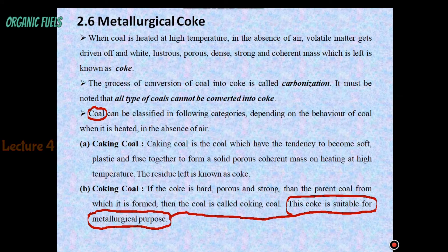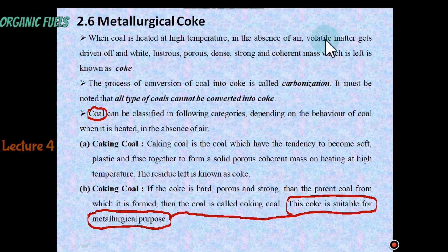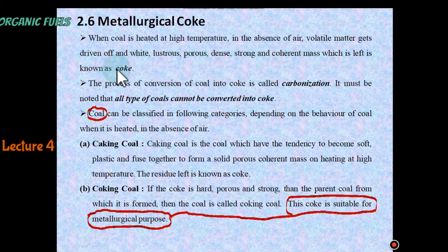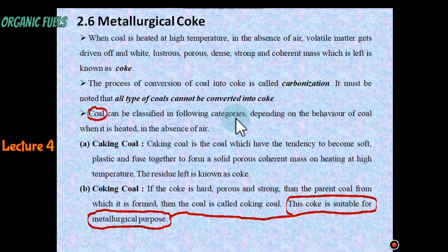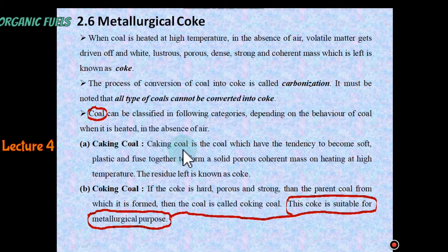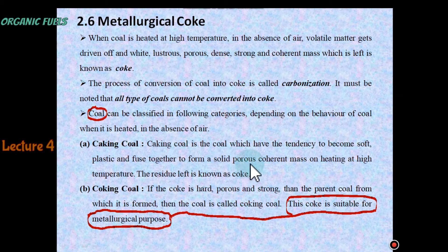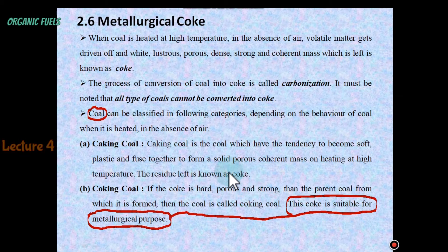Now regarding metallurgical coke: when coal is heated at high temperature in the absence of air, volatile matter gets driven off, and the white, lustrous, porous, dense, strong, and coherent mass which is left is known as coke. The process of conversion of coal into coke is called carbonization. It must be noted that not all types of coal can be converted into coke. Caking coal is coal that has the tendency to become soft, plastic, and fused together to form a solid porous coherent mass on heating; however, the coke formed is not useful for metallurgical purposes.